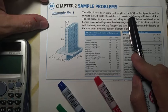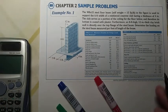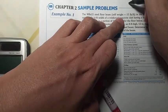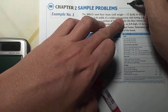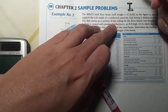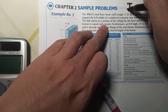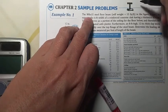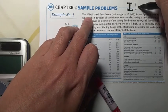It's an I-shaped section, something like this. Then from its designation W8 by 15, the 8 corresponds actually to the nominal depth, so that means the depth is 8 inches.